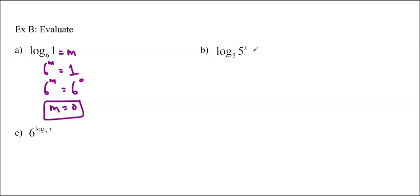For this one, again, we are going to use exponential form. So I'm going to put m there. So 5 to the m is equal to 5 to the x. So m is equal to x. So the answer for this is actually x. Log base 5 of 5 to the x is equal to x.